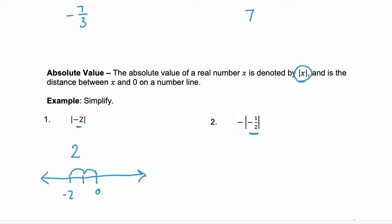In problem 2 we have the opposite of the absolute value of negative 1 half. Notice inside the absolute value is a negative 1 half. So that inside comes out as a positive 1 half. But then we're told to take the opposite. So this simplifies to negative 1 half.